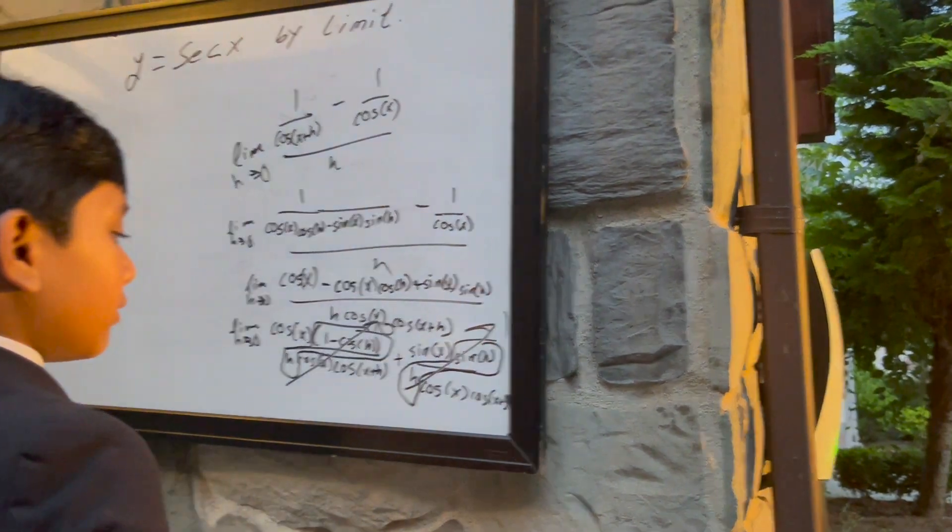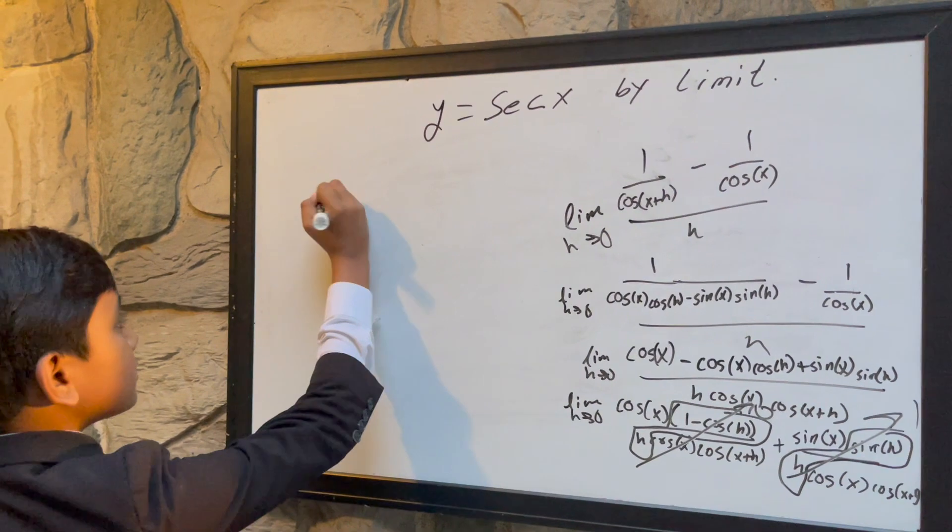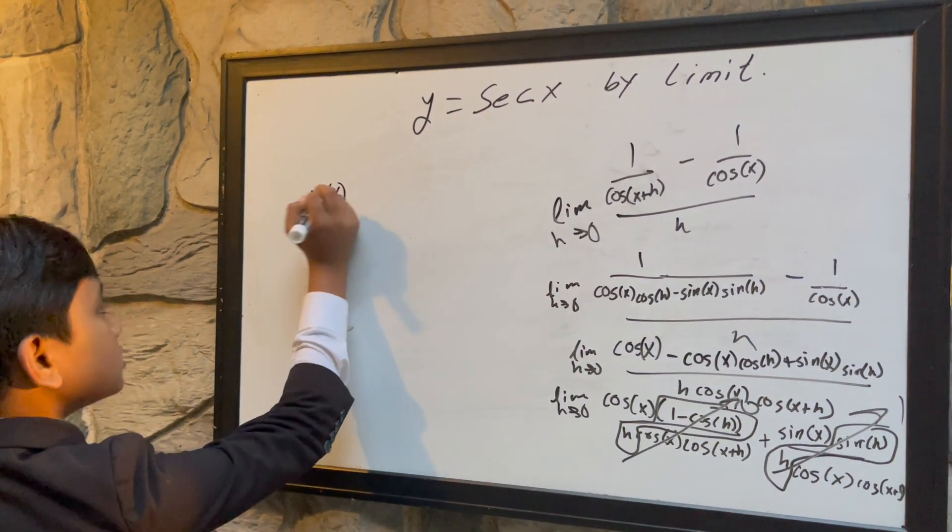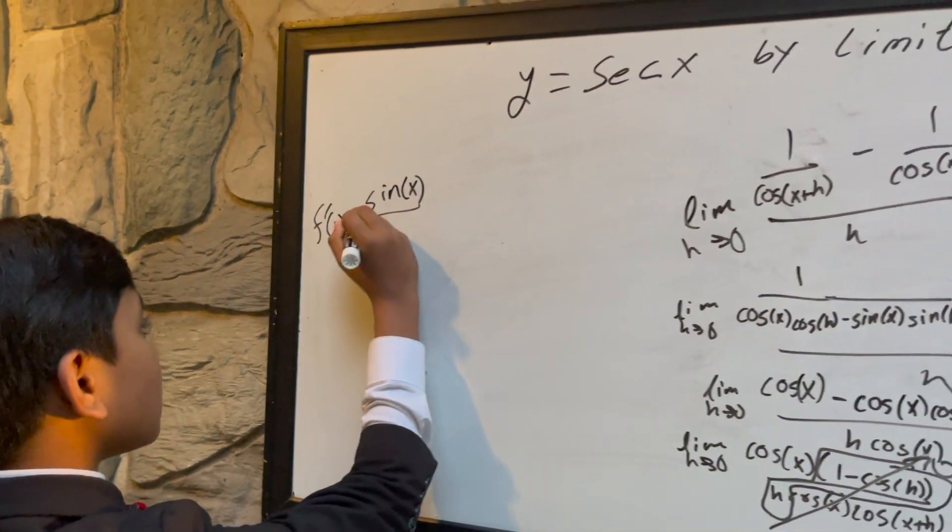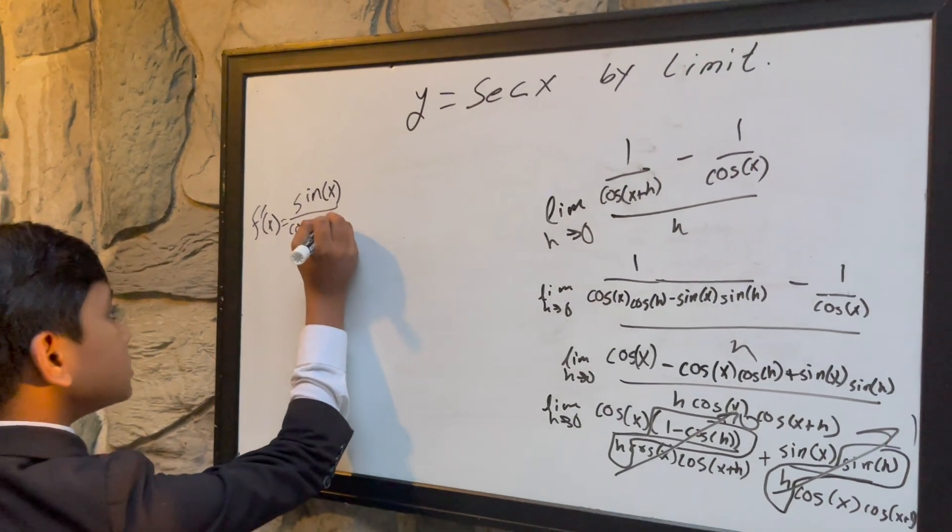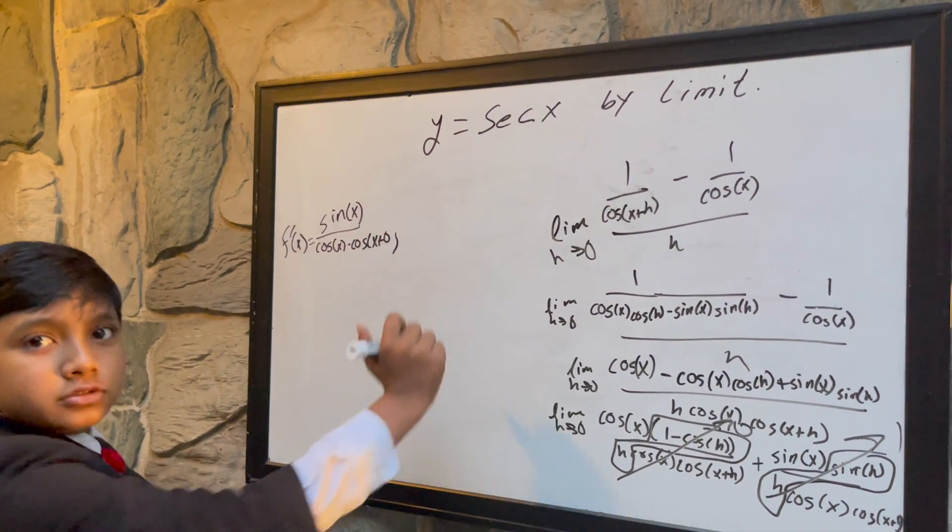So, that means that we have, we don't need the limit anymore because we have sine of x over cosine of x times cosine of x plus zero, which is also cosine of x.